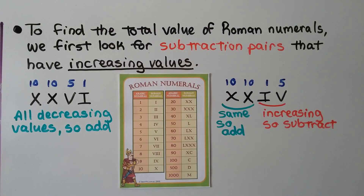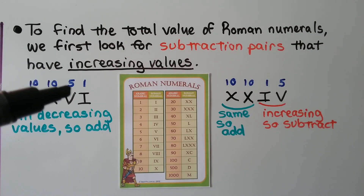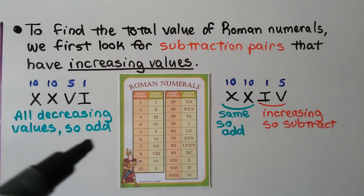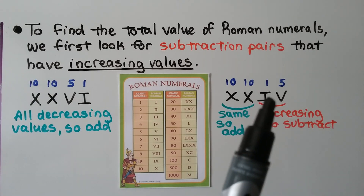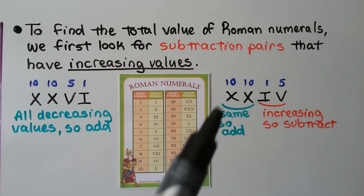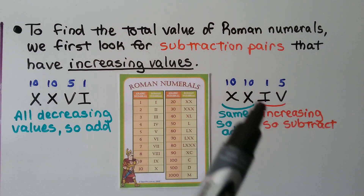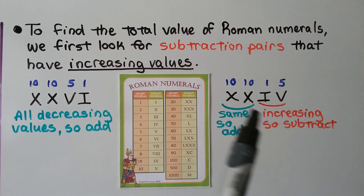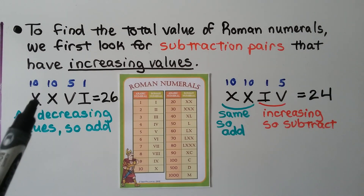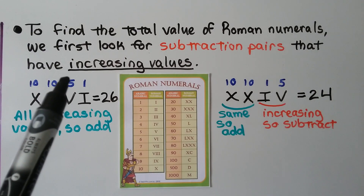To find the total value of Roman numerals, we first look for subtraction pairs that have increasing values. Here we have XXVI — the values go 10, 10, then down to 5, then down to 1. Because these are all decreasing values, we just add them: 10, 20, 25, 26. Now we look at XXIV — the first two X's are the same so we add them, but then we have the subtraction pair IV where the values go up from 1 to 5, which is increasing. So we do 10, 20, and then 5 minus 1 is 4, giving us 24.